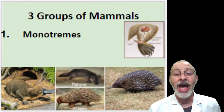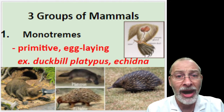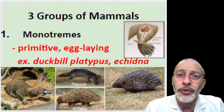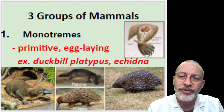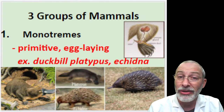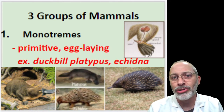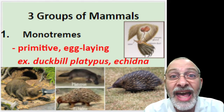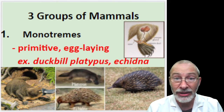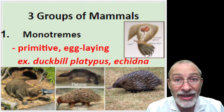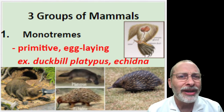Let's begin with the monotremes. The monotremes are the most primitive of mammals, meaning they have the simplest structures and physiology, and they've been around for a longer period of time than other groups of mammals. Here's the weird thing about monotremes — they lay eggs. I mean they literally lay eggs, like birds.